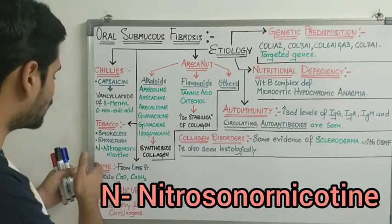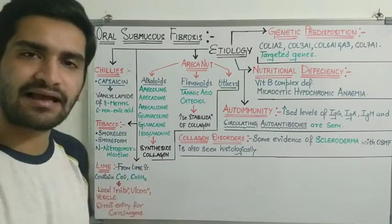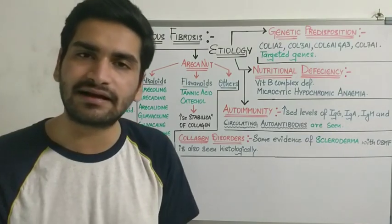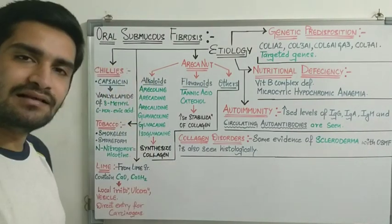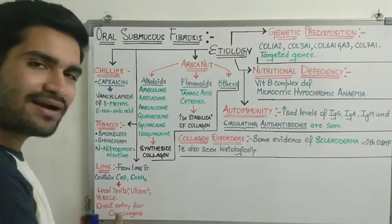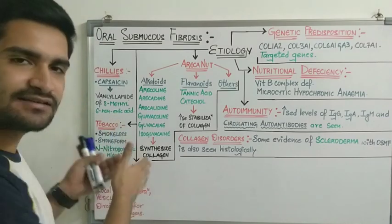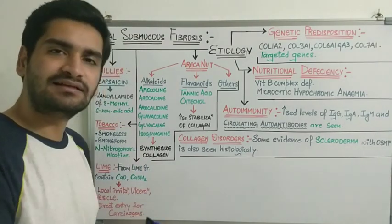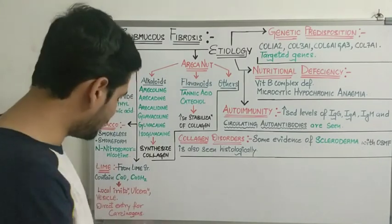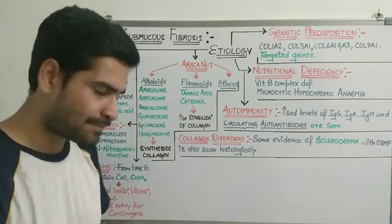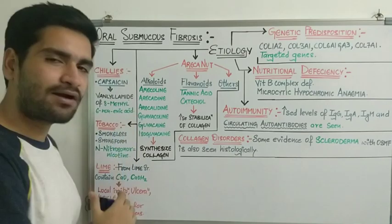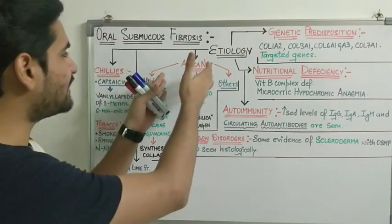The third factor is lime — chuna — obtained from limestone, containing calcium oxide and calcium hydroxide. Both compounds cause local irritation of the oral mucosa, resulting in ulceration and vesicle formation. Lime also provides direct entry for carcinogens into the oral mucosa because ulceration creates a breach in continuity, helping carcinogens penetrate the oral mucosa.